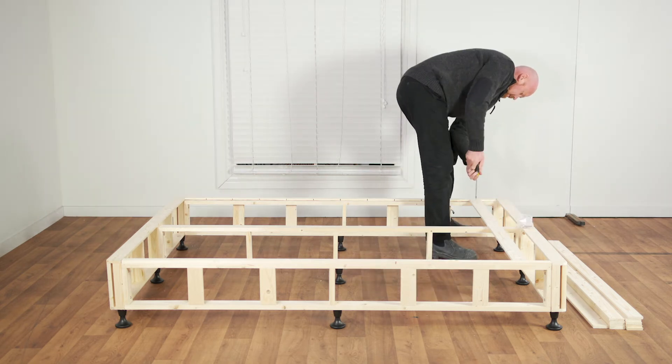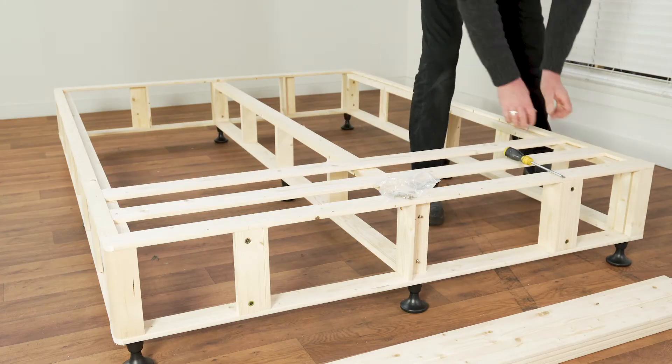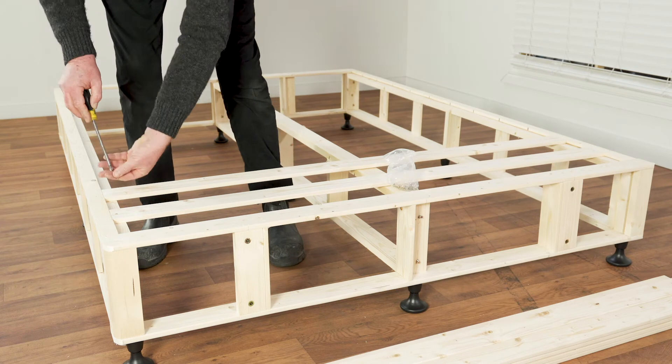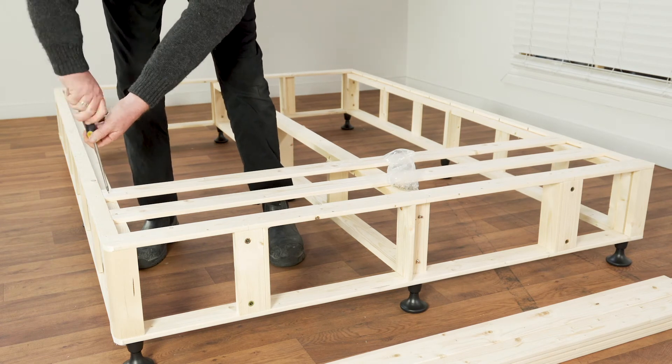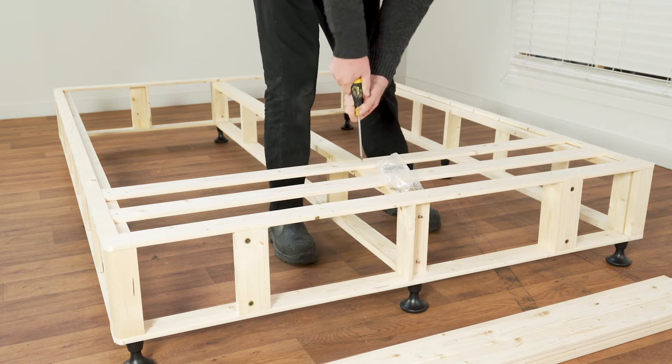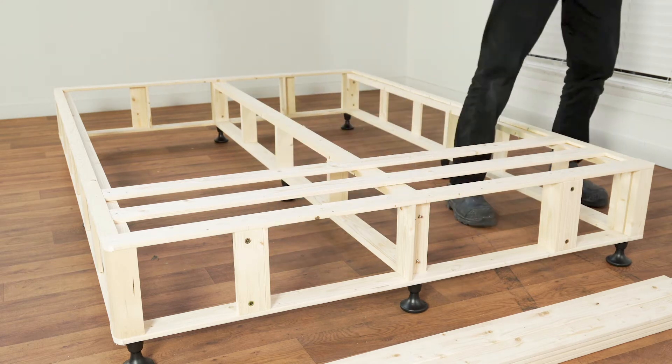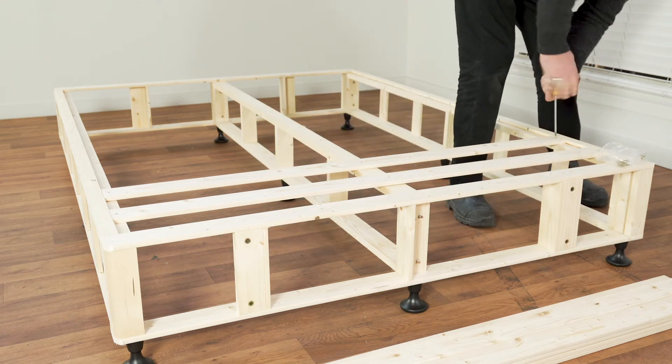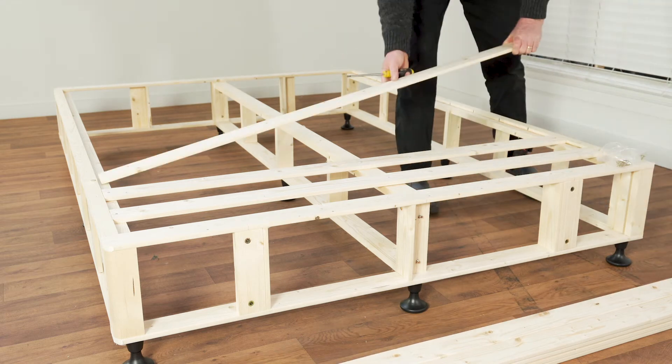Secure it to the two edges and in the centre. Use the 33 screws provided in the hardware pack and screw each of the 11 slats to the frame, one at a time, working from the head to the foot. This ensures you don't have to lean over the bed frame to secure the slats to the centre frame.